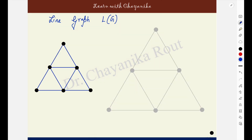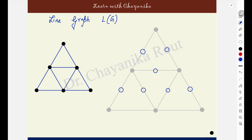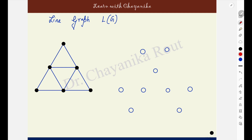Next, come to this graph. Corresponding to every edge I am drawing a vertex. This was an edge in the original graph — corresponding to that edge I have drawn this vertex. This is another edge; I am drawing a corresponding vertex for the line graph. Corresponding to every edge in the graph you will need a vertex in the line graph. There are nine edges, so there are nine vertices in the line graph.